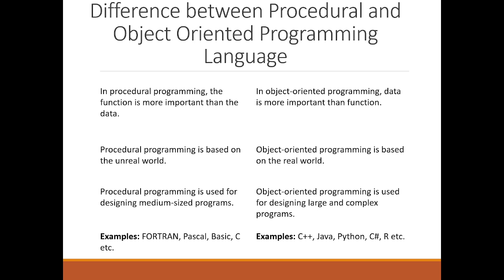OOP can be complex because it involves several features like inheritance, polymorphism, encapsulation, and data hiding, but it is considered the best programming approach. Examples of procedural programming languages include Fortran, Pascal, Basic, and C. Examples of object-oriented programming languages include C++, Java, Python, R, and C#. Thank you everyone — I hope you have understood.